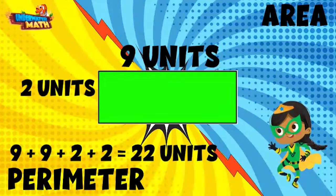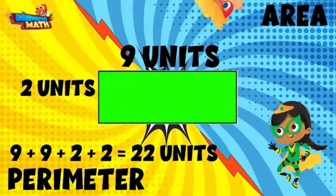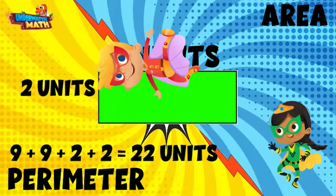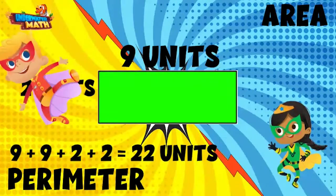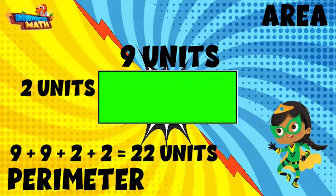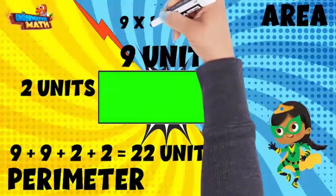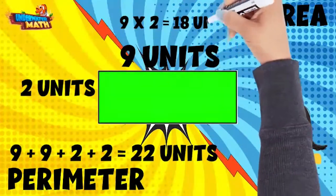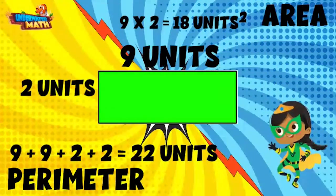You've managed to get the perimeter, Mirage, but can you calculate the area? I am right here and you will never get the area! I think we've got this. Area equals the length times the width. The length is nine and the width is two. Nine times two equals 18. This rectangle is 18 units squared. Got you again, Villain Vance!